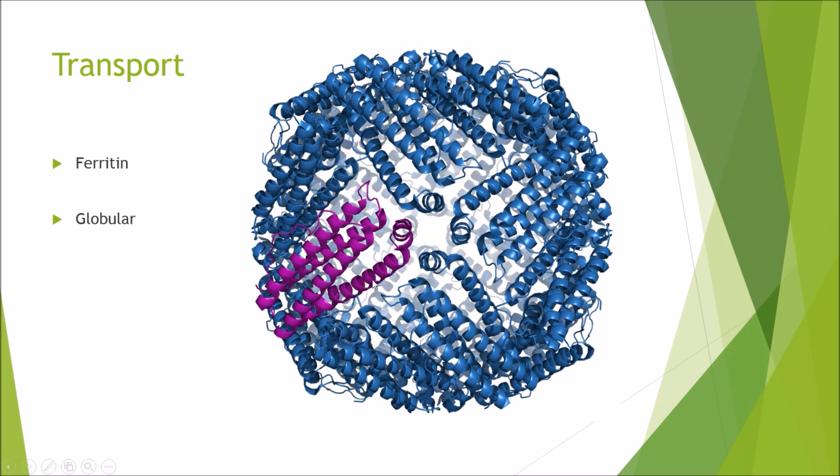Then for the final one we've got storage proteins. This one here is called ferritin. Here you'll have iron binding in the middle of the ferritin molecule and then you can transport it to places for heme. As you can see it's globular in shape.